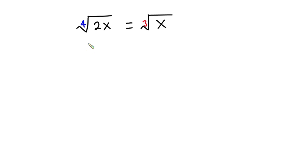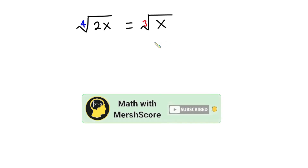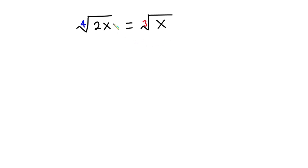Hello everyone. In this video we're going to be finding the value of x from this radical equation: the fourth root of 2x is equal to the cube root of x. Before we begin, pause the video and try first. If you are new here, consider subscribing and don't forget to like this video. Now let's get started — I'm going to raise each side of this equation to the fourth power.